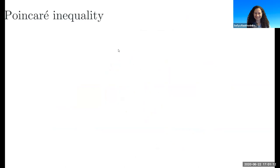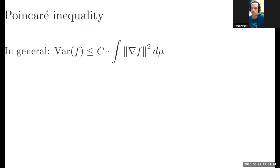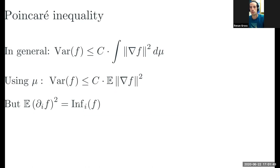We are dealing with Boolean functions and specifically with functional inequalities on the Boolean hypercube. Perhaps the most basic functional inequality is called the Poincaré inequality. It says that given some probability distribution mu on the space, the variance of a function is smaller than some constant times the integral of the squared norm of the derivative of f. Translating this into Boolean functions, since the squared norm of the gradient is related to influences, we get the Boolean Poincaré inequality: the variance of f is smaller than the sum of the individual influences.